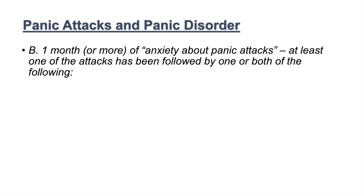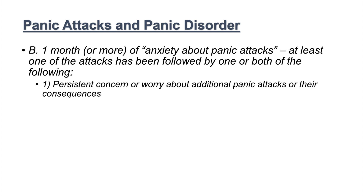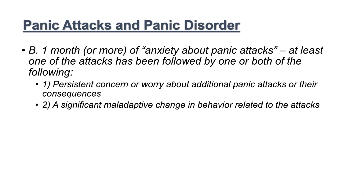The B criteria is one month or more of anxiety about panic attacks — that's very important. It requires at least one of the attacks to be followed by a persistent concern or worry about additional panic attacks or their consequences, or a significant maladaptive change in behavior related to the disorder. So individuals change the way they function in their day-to-day lives because of anxiety about panic attacks.